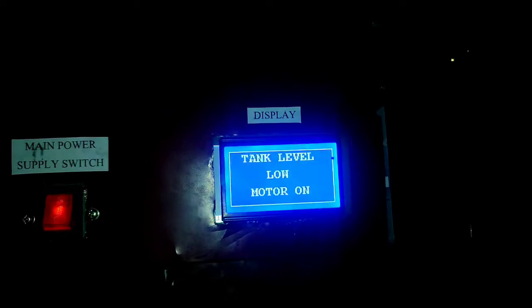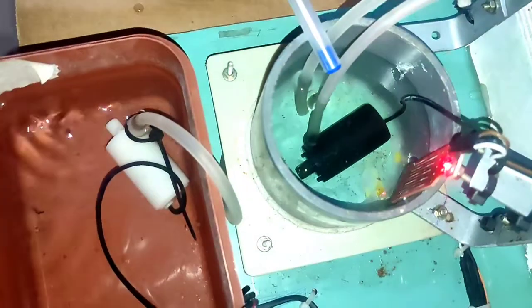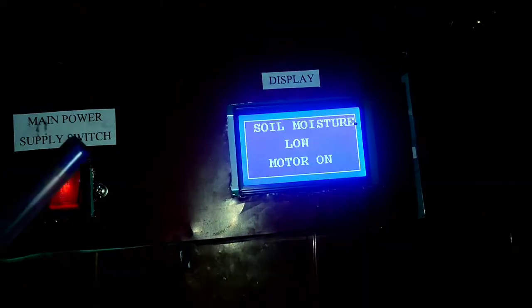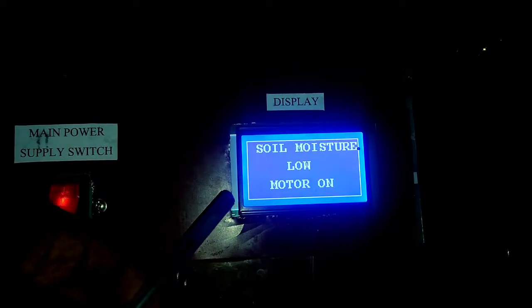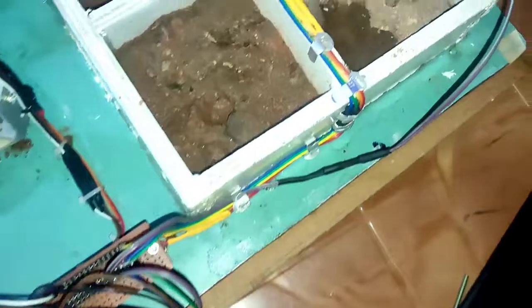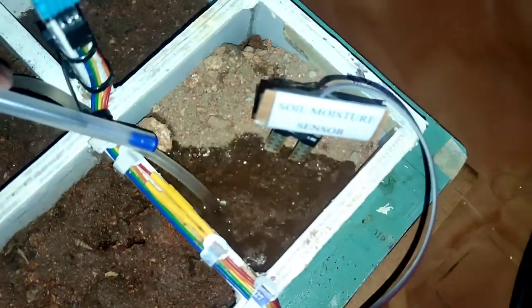Tank level low. Motor is on. We can see filter tank. Now, soil moisture sensor low. Motor is on. Water in the field.